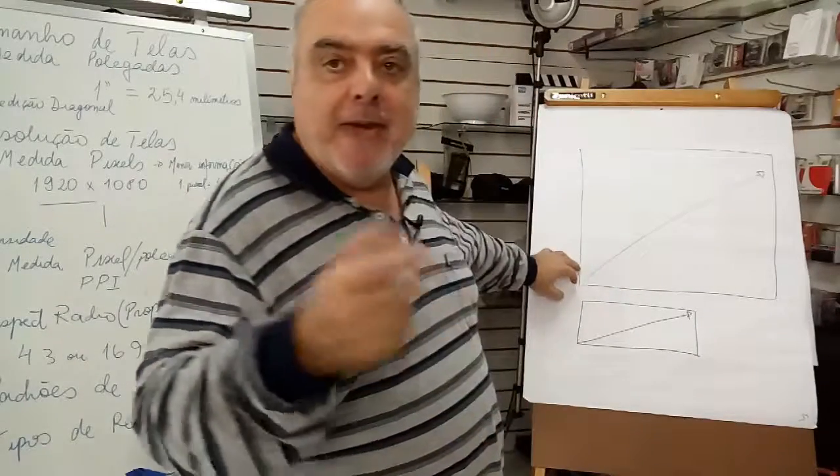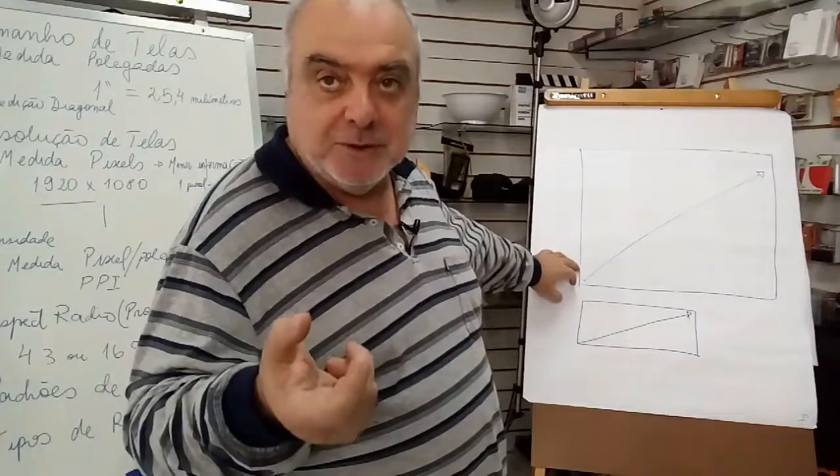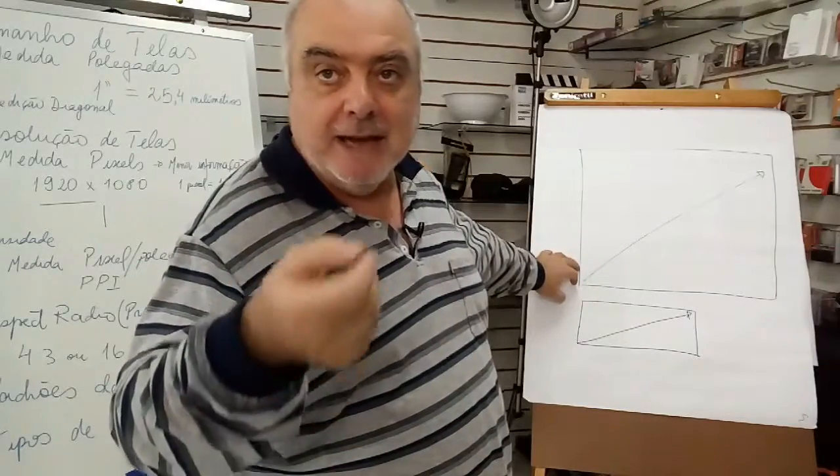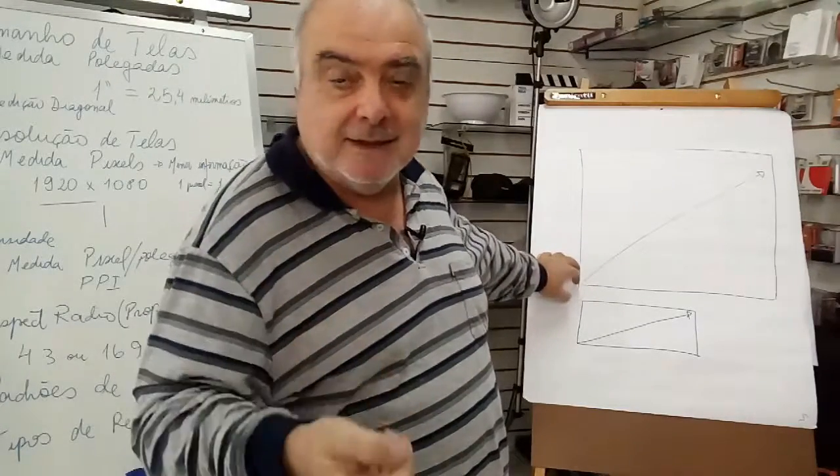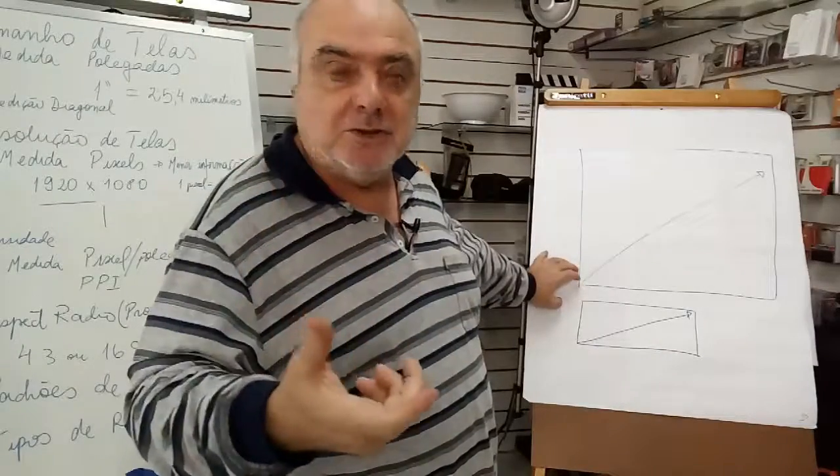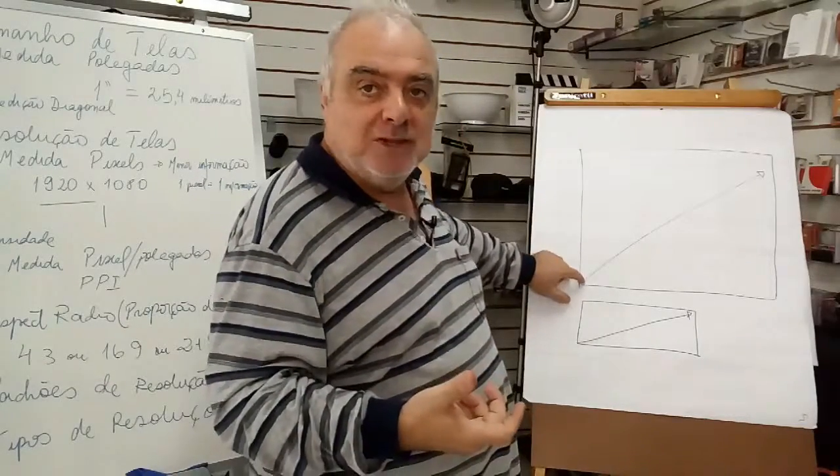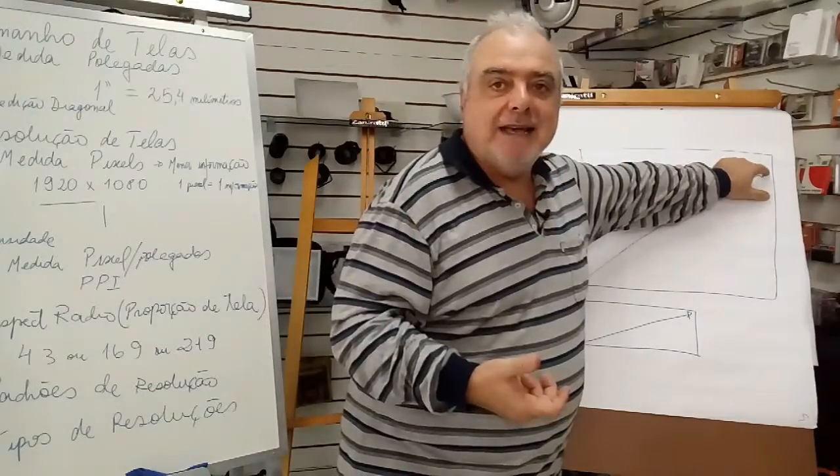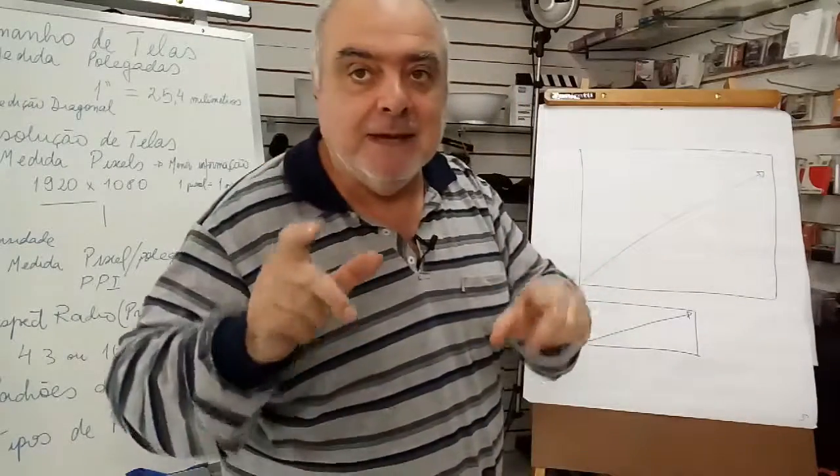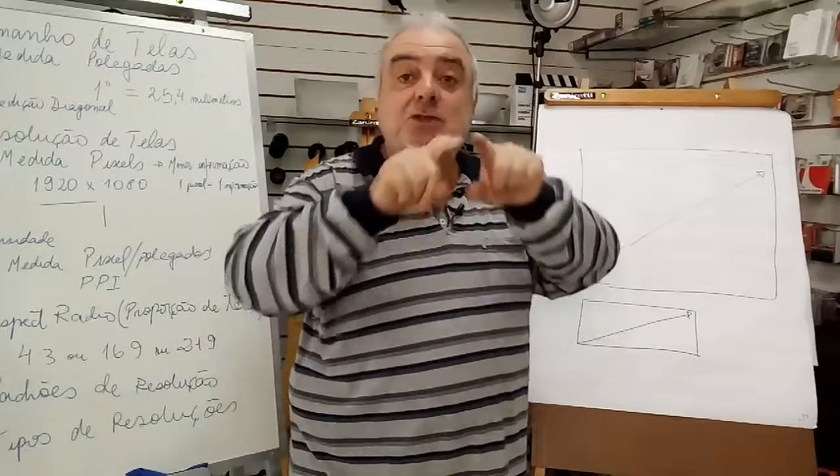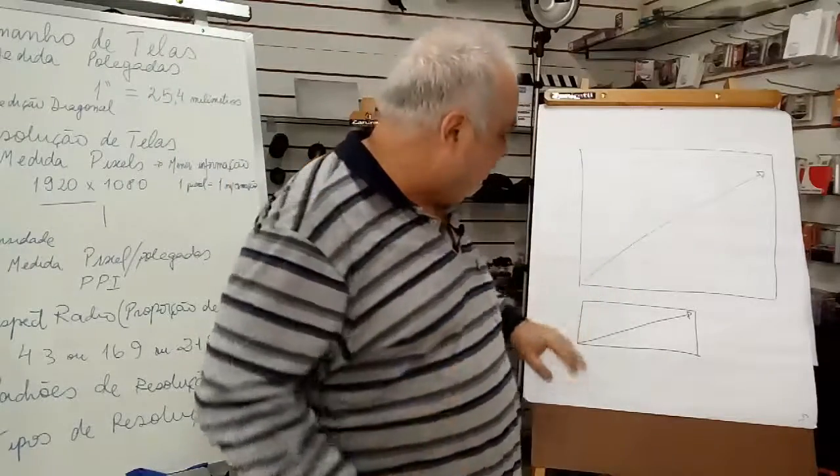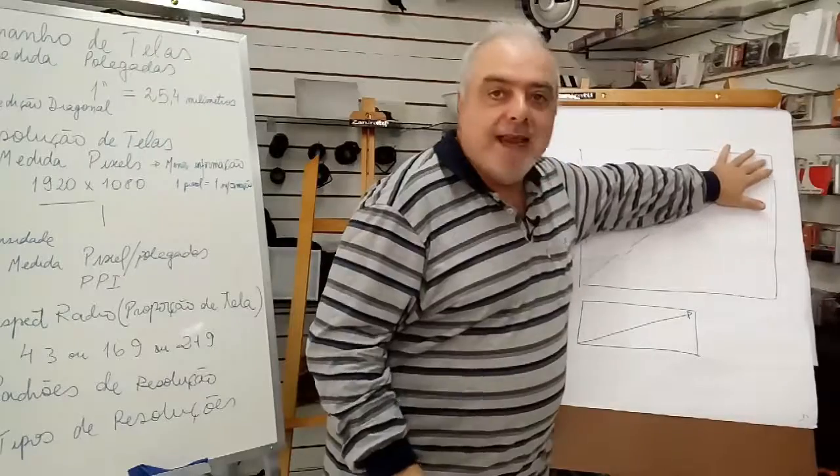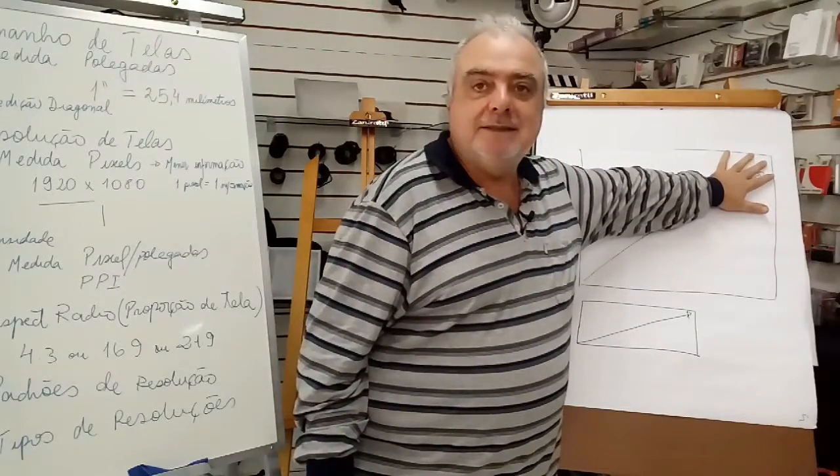Então, eu pego um instrumento que eu estou mensurando, que pode ser uma régua, que pode ser uma fita métrica, ou que pode ser um outro instrumento, e meço no início da tela aqui embaixo e vou até o final da tela aqui em cima. É só da tela.